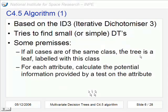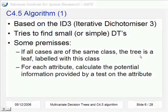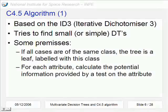Now we're going to talk about the C4.5 algorithm that is based on a previous algorithm, ID3, that means Iterative Dichotomizer 3. The aim is to find small or simple decision trees based on some premises: that if all cases belong to the same class, at this point the tree is a leaf and we label it with that class. And for each attribute we calculate the potential information provided by a test, executing a test on this attribute.